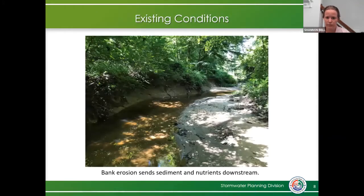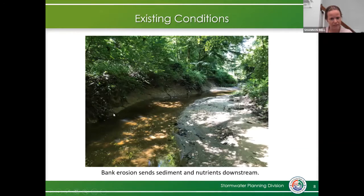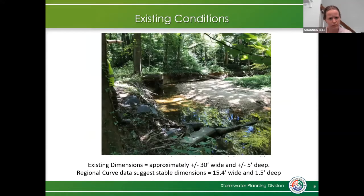I wanted to show you some existing conditions of the stream. As you can see from the pictures, there are raw banks, meaning there's a lot of bank erosion happening, which is sending sediments and nutrients downstream — ultimately going to the Chesapeake Bay and adding to the pollutant load. One of our goals is to help reduce that sediment load. While out looking at the project, we took measurements: the stream channel is approximately 30 feet wide and 5 feet deep.